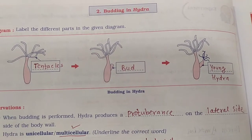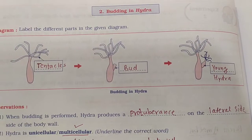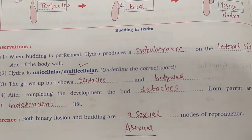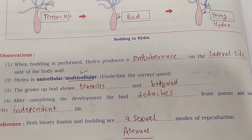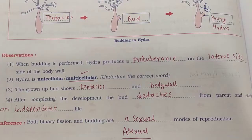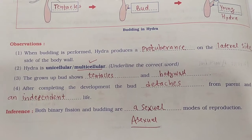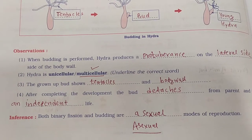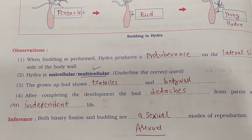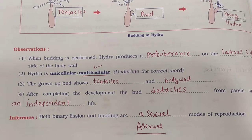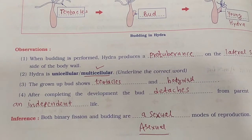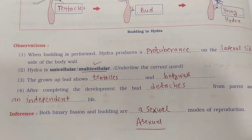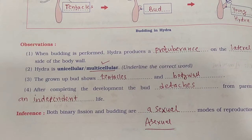Now let's look at the observations for hydra. When budding is performed, hydra produces a protuberance on the lateral side of the body wall. Hydra is a multicellular organism. The grown-up bud shows tentacles and a body wall.